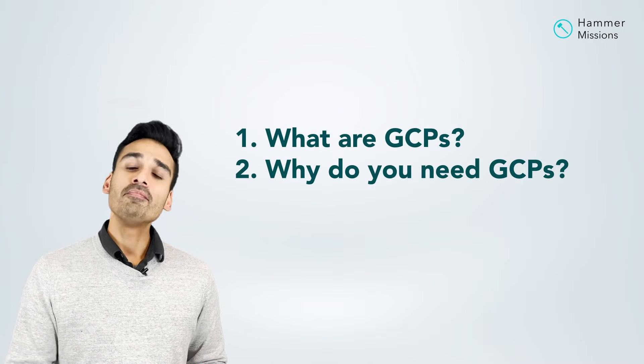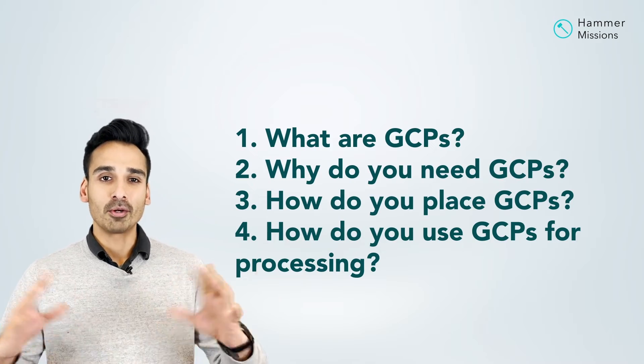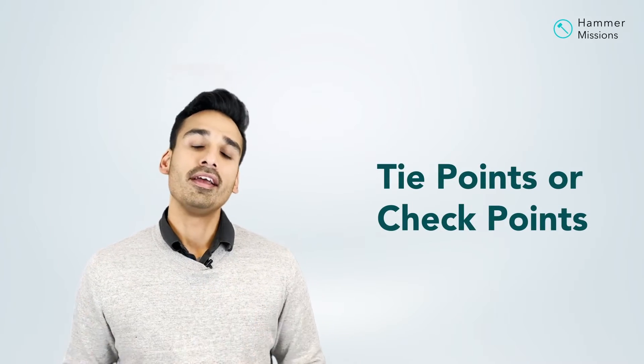To recap: we looked at what GCPs are, why you need them, how to place them on your site, how to measure the coordinates, and how to upload that data into a processing platform. One final thing to mention is the emerging concept of tie points or checkpoints — where you partition your GCPs into two sets: one set used to actually create the accurate map or model, and another set that is not used in creation but used to verify and check the accuracy of that map. These checkpoints are essentially GCPs used for validation rather than processing.